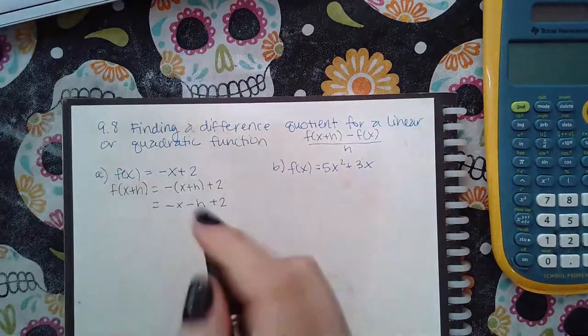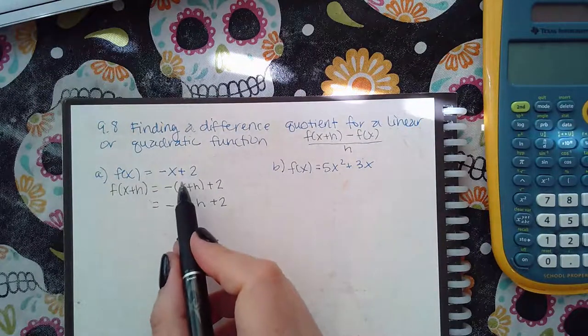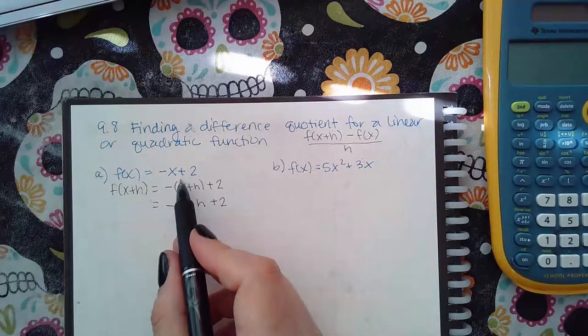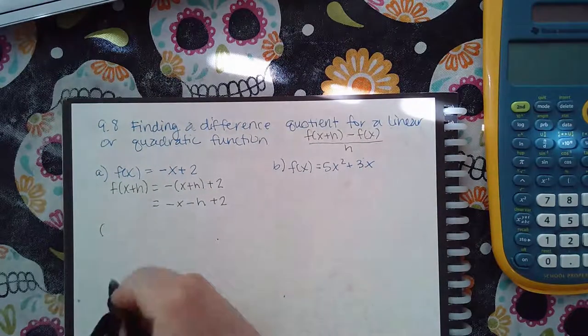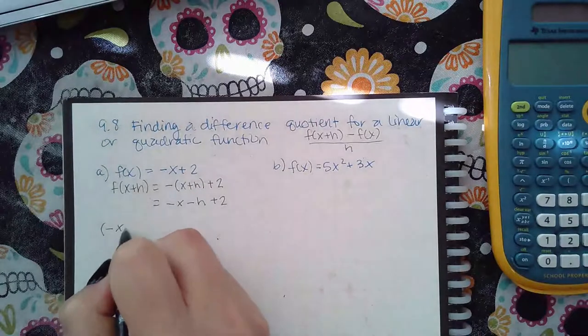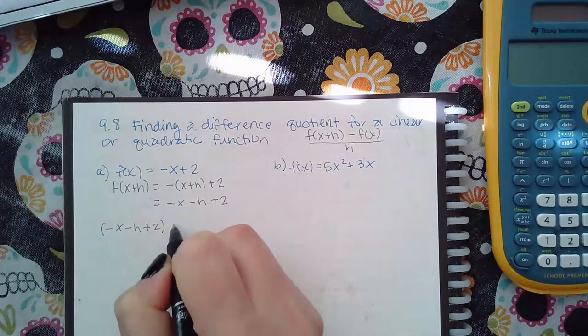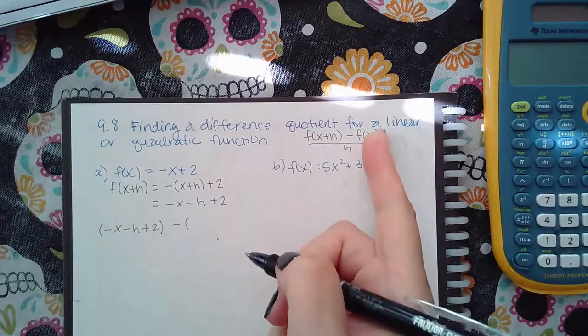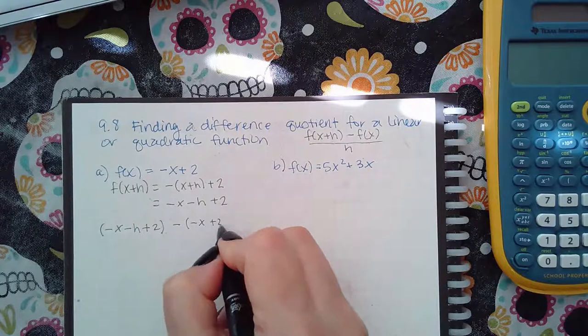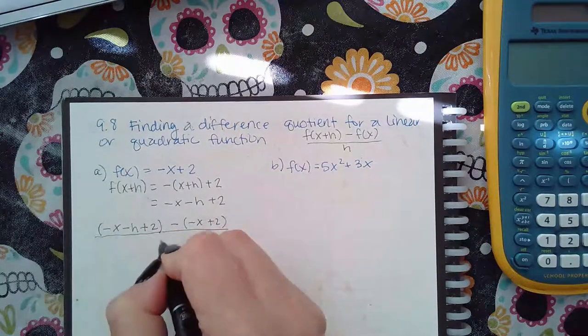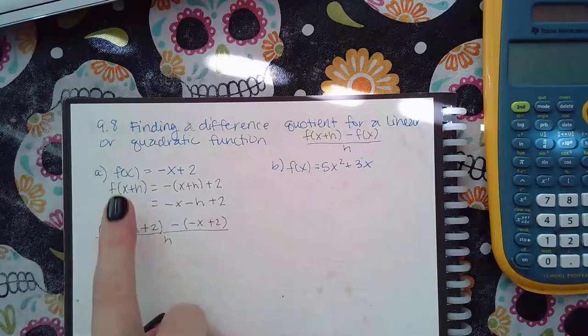And so then now I have an expression for f of x plus h, and I have an expression for f of x. So I'm going to go ahead and do this. So the expression for x plus h is going to be negative x, negative h plus two. And the expression that I'm going to plug in for f of x is going to be negative x plus two. And the whole thing goes over h. This is the difference quotient for this function.